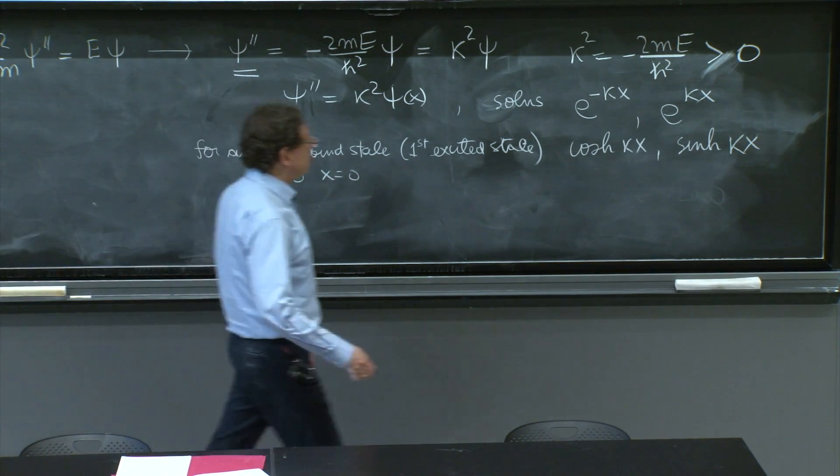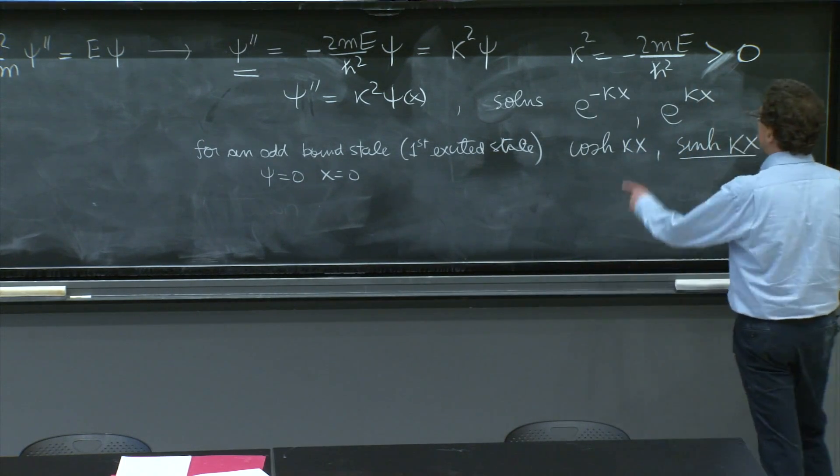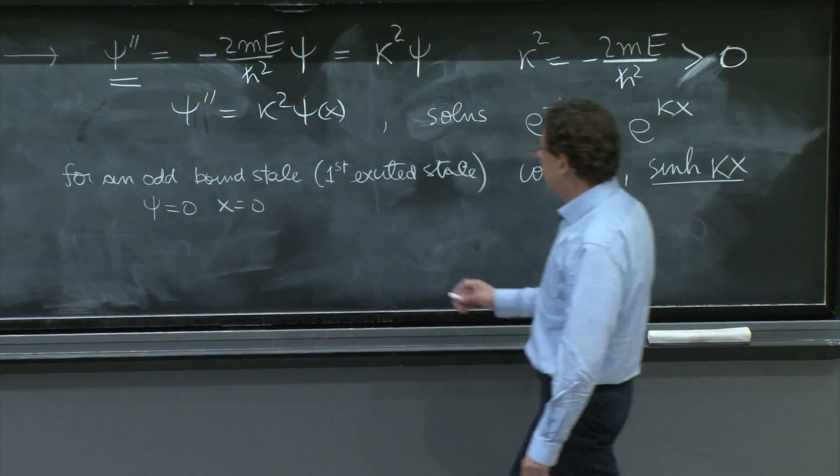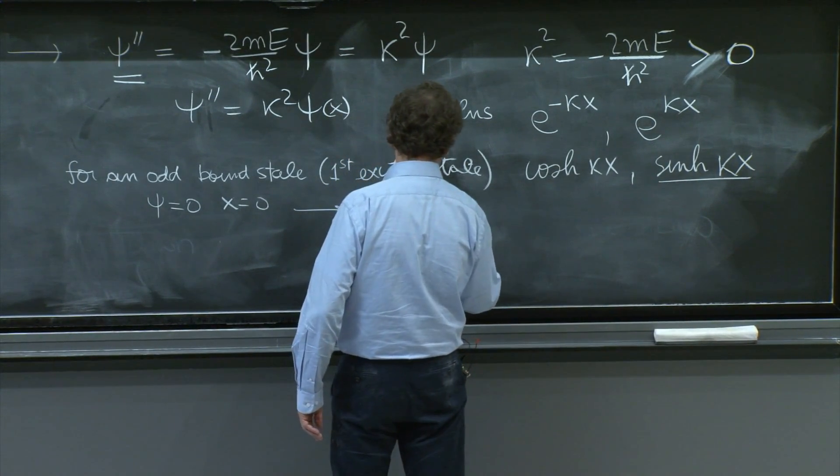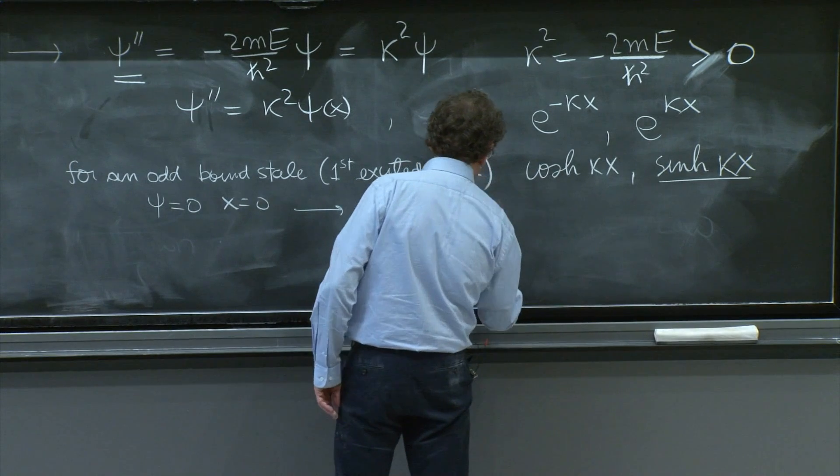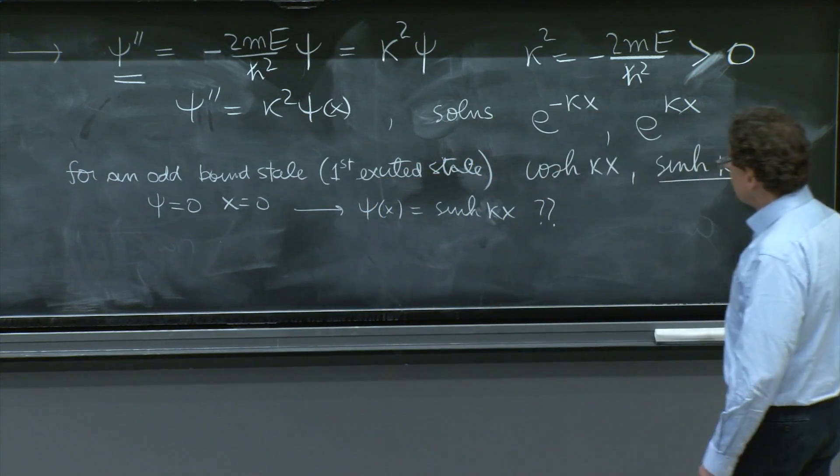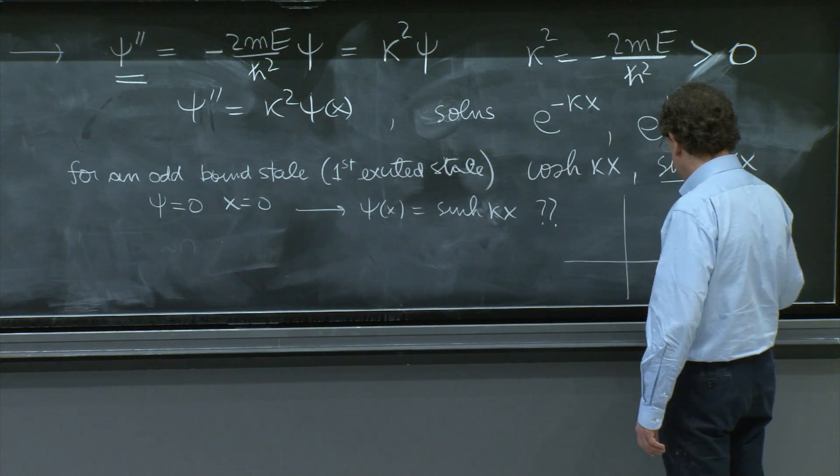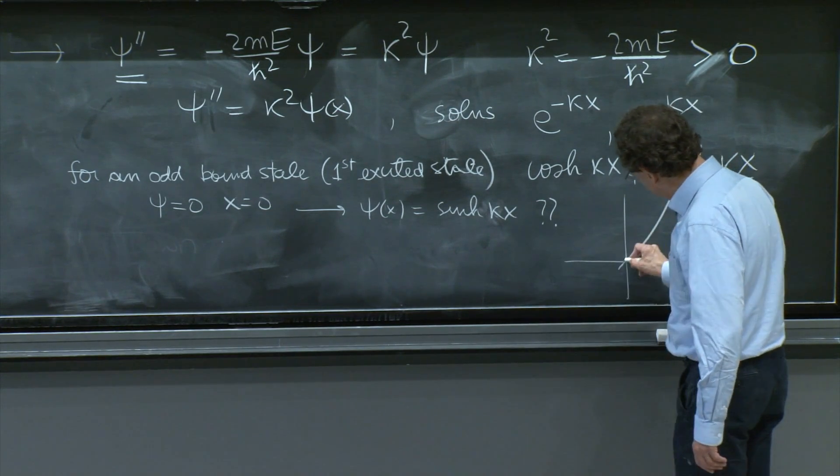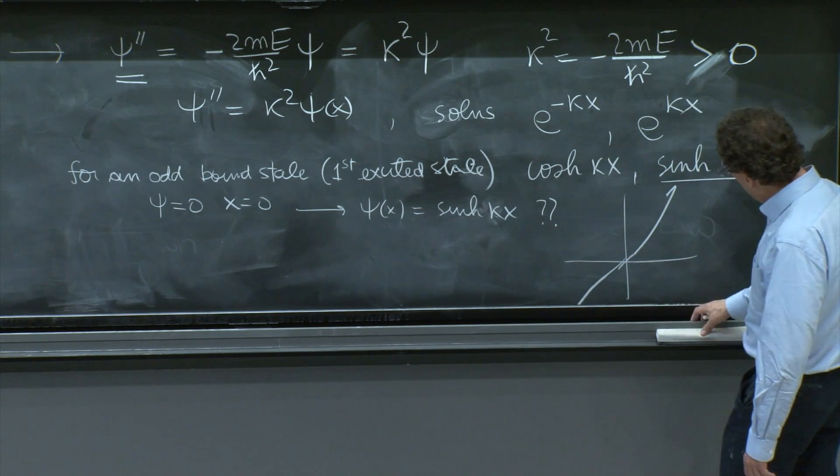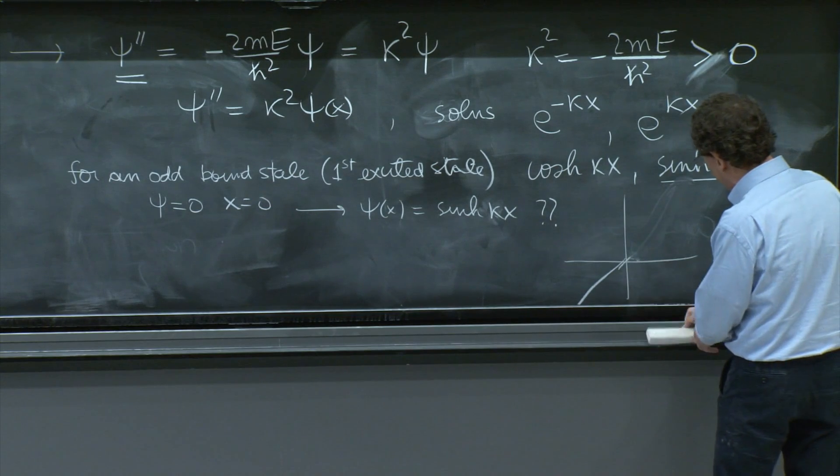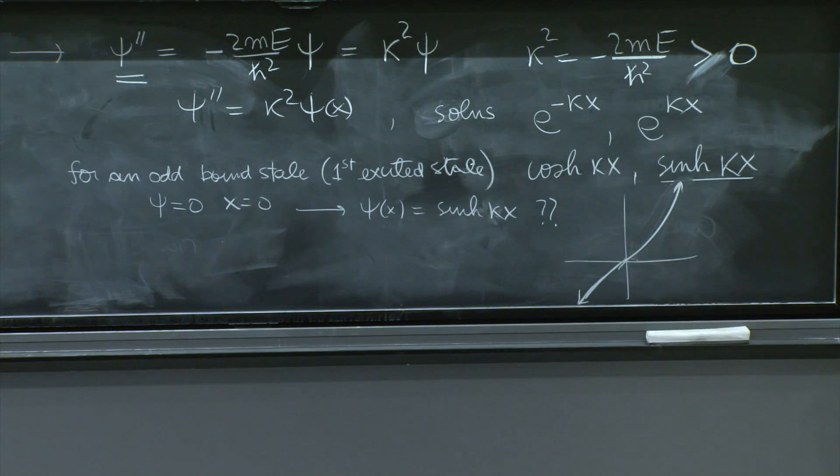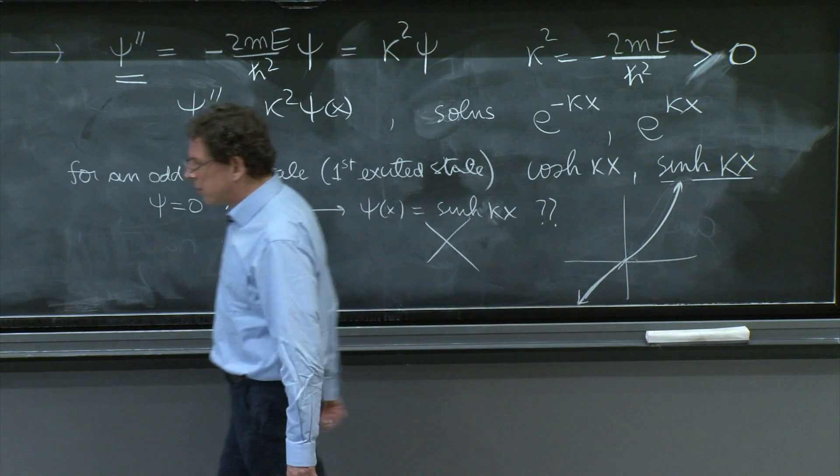And the way to do that would be to have a sinh, because this doesn't vanish at 0, and cosh doesn't vanish at 0. So you would need ψ(x) = sinh(κx). But that's not good. Sinh of κx is like this and then blows up, blows down. It has to go like this. It is in a forbidden region, so it has to be convex towards the axis and convex here. But it blows up. So there's no such solution.